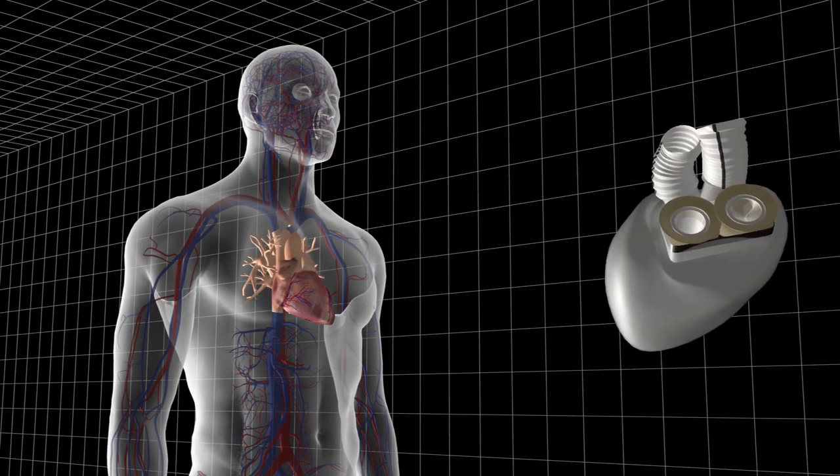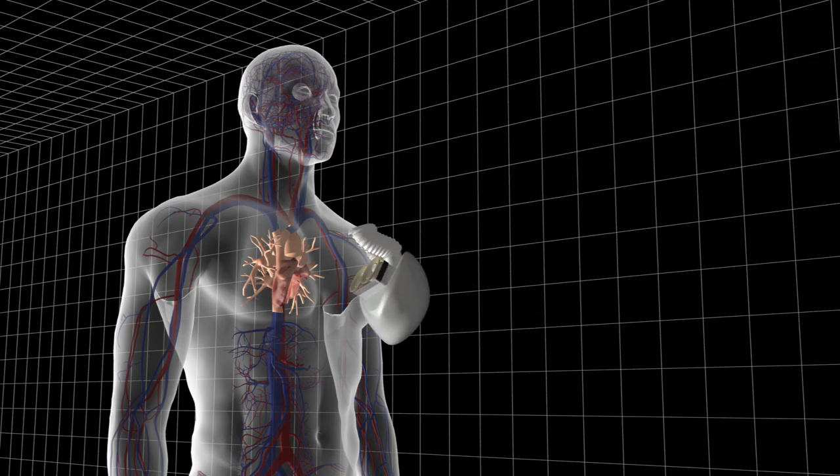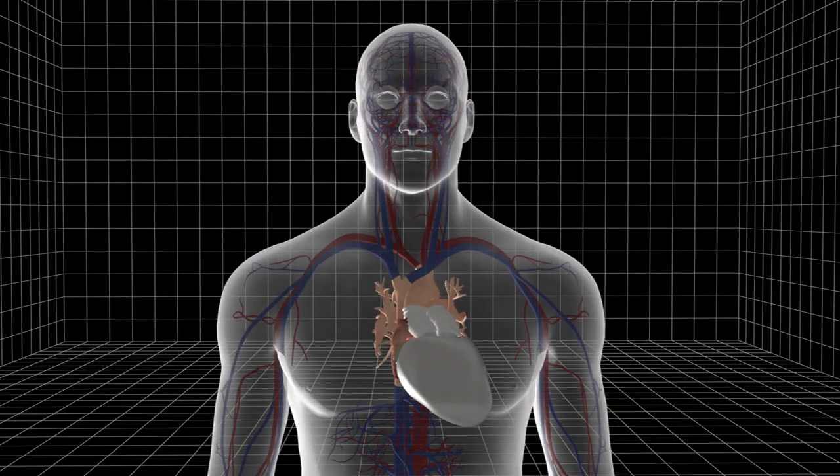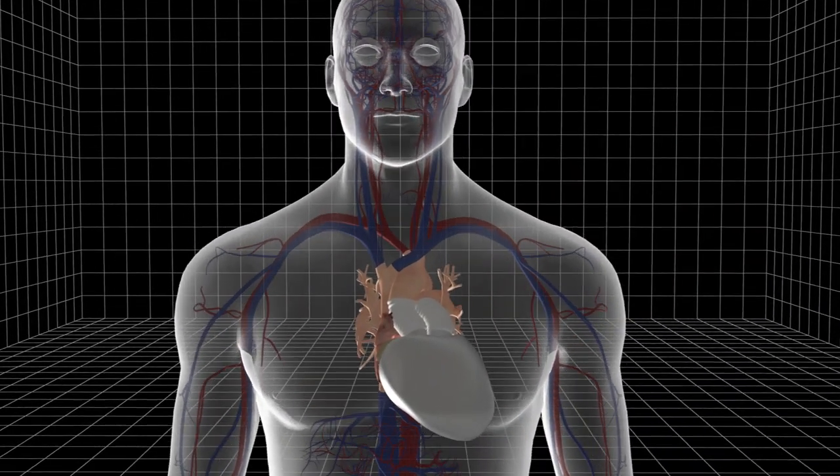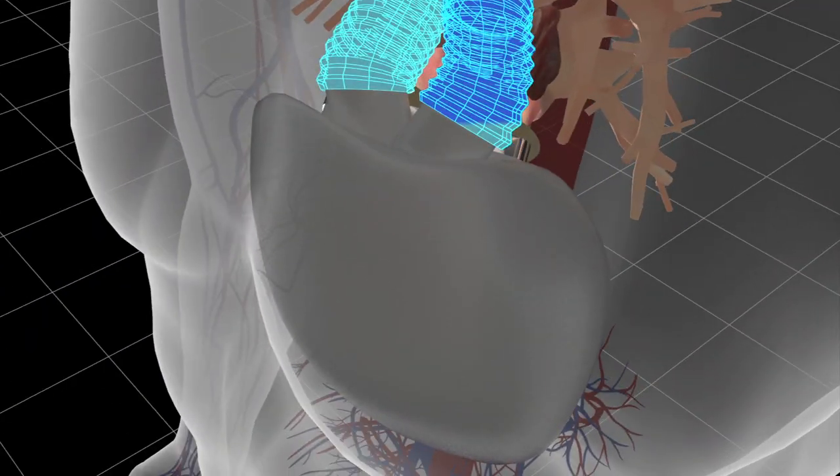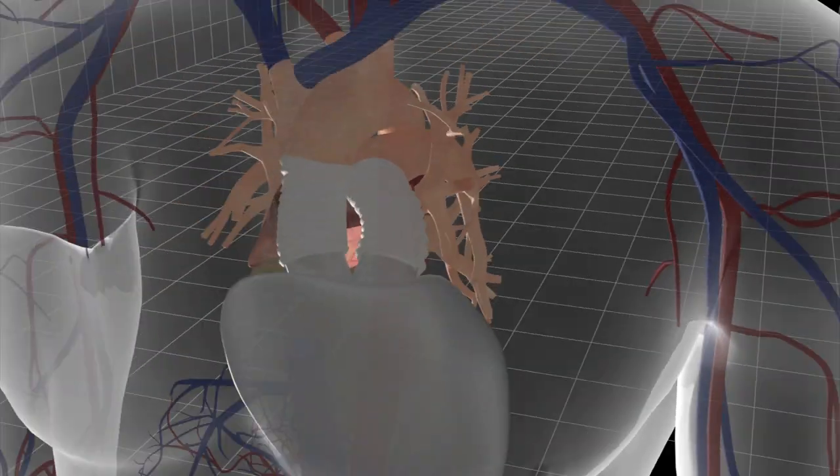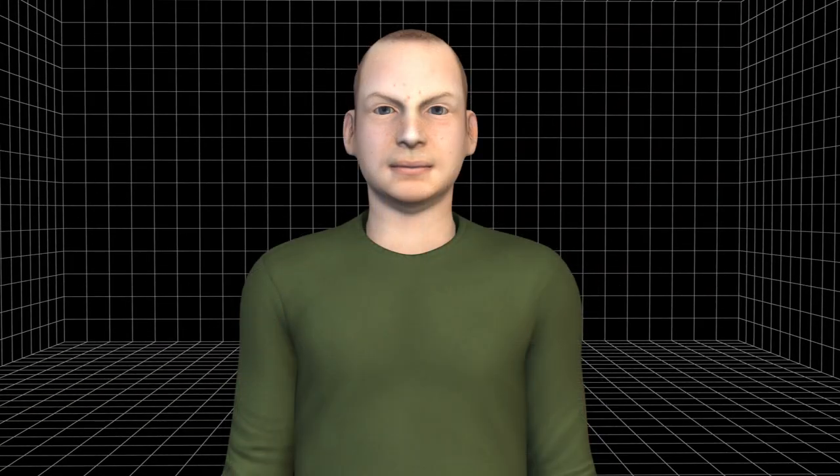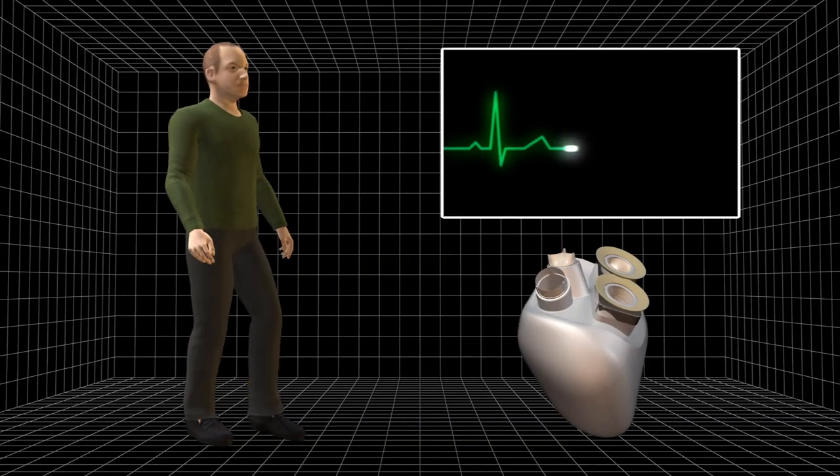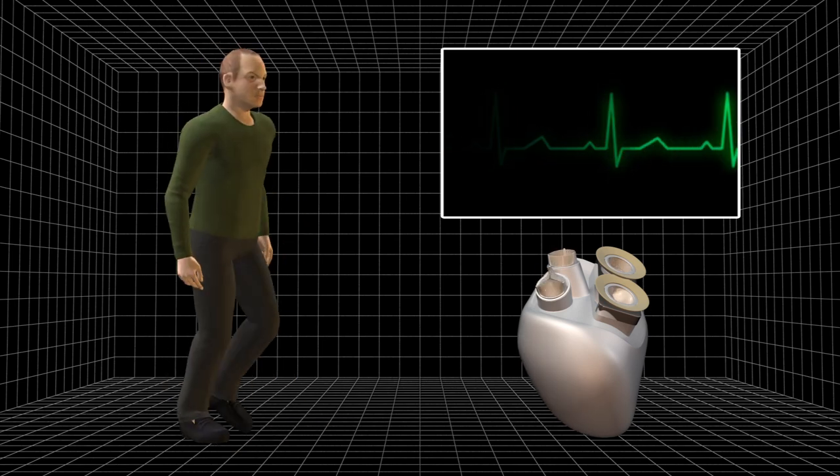The CARMET artificial heart's shape and size are similar to those of a natural heart. It has two ventricles and four valves that can reproduce the pulsatile flow of blood circulation, and accelerate and reduce cardiac rhythm according to the level of efforts being exerted by the patient.